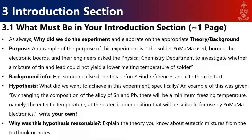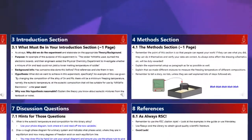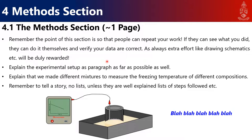In the method section, the goal is always so that people can repeat the work and verify the data you collected. You can include drawings — make your own rather than screenshotting. Explain the experimental setup in a paragraph, as detailed as possible, and explain how you made the different mixtures and compositions. Write it as a story, not a bulleted list — nobody wants to read 15 bullet points.